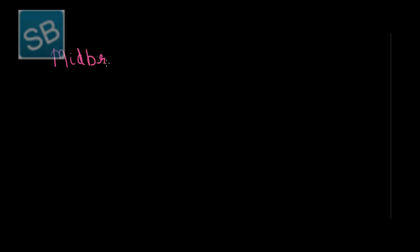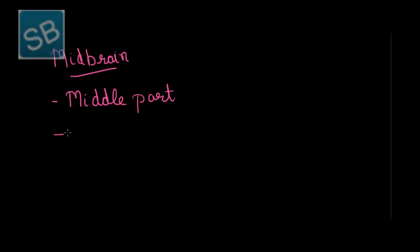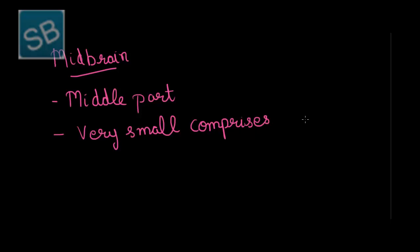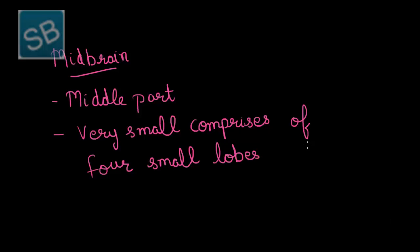Now let us start with the second part of the brain, i.e., midbrain. As the name suggests, midbrain is situated in the middle part of the brain. This midbrain is very small and it comprises of 4 small lobes and corpora quadrigemina.